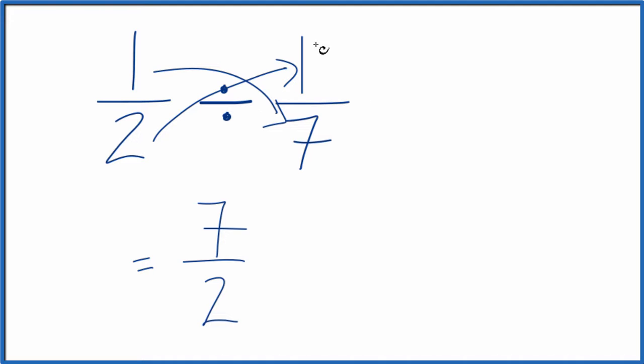Essentially, we're just multiplying by the reciprocal when we do this. Just a different way to do it. This is Dr. B dividing 1 half by 1 seventh. Thanks for watching.